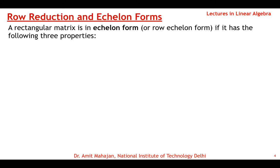We can use elementary transformations to find an equivalent matrix and reduce it to a special form called the equivalent form or row equivalent form. A rectangular matrix is in equivalent form (row echelon form) if it satisfies the following three properties.